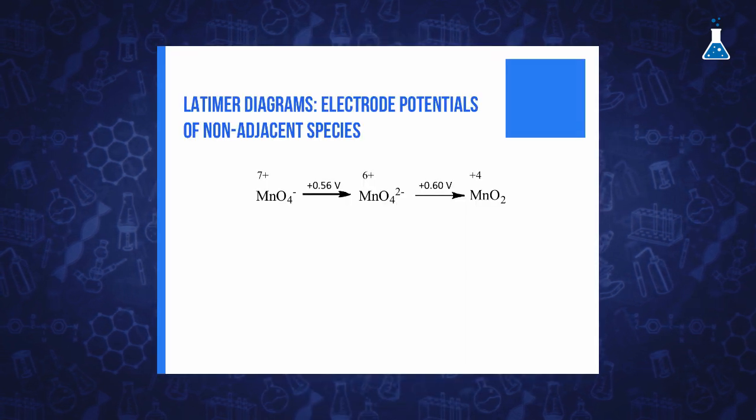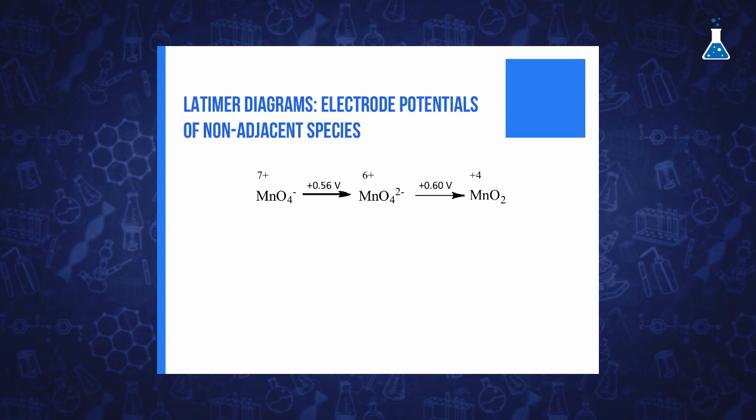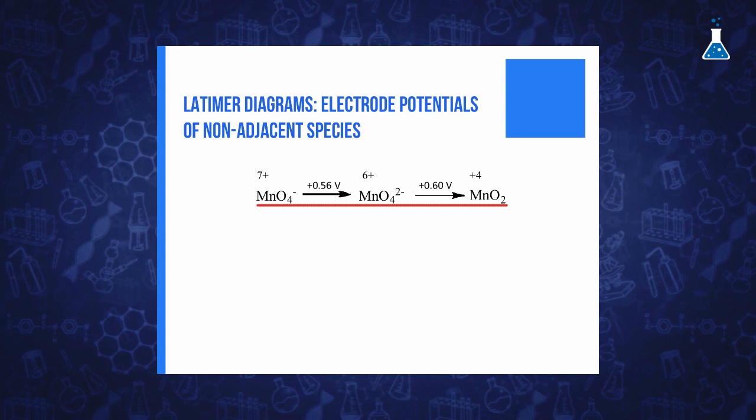Firstly, we should determine the variation of free energy for that process. That would be the sum of the variation of free energy of the individual steps.